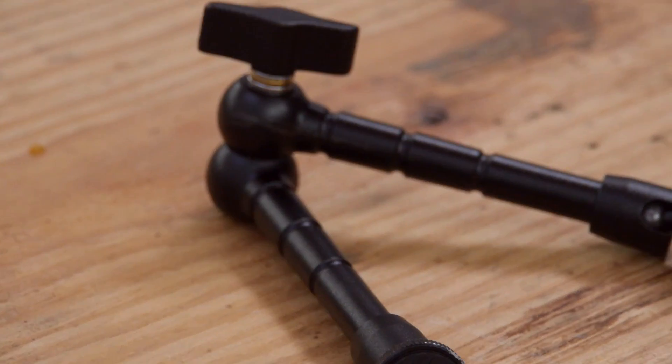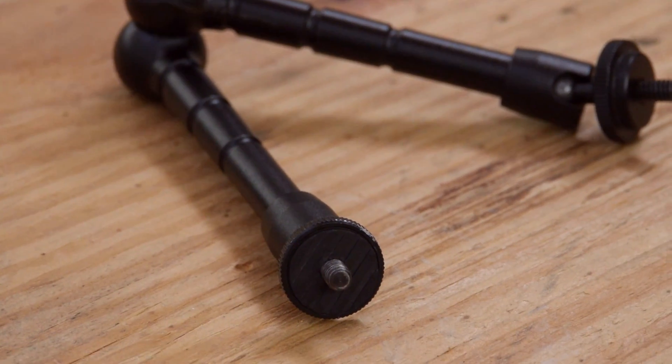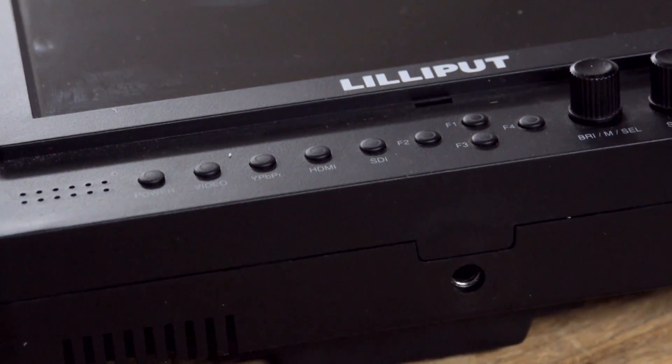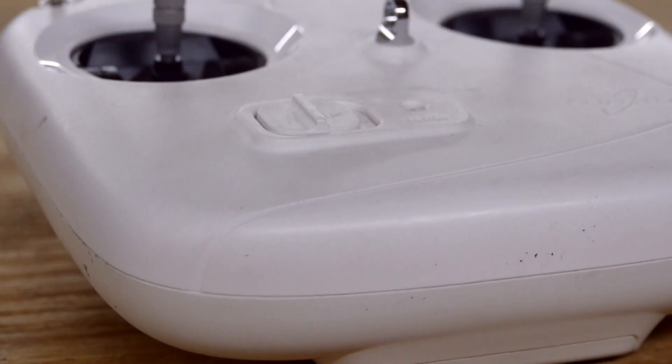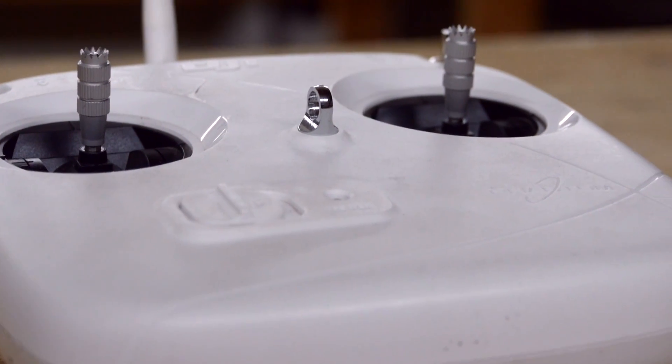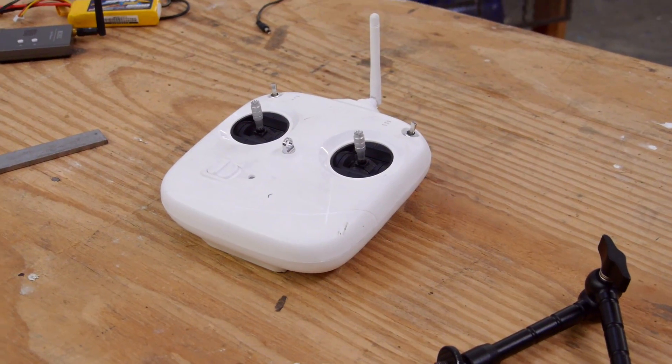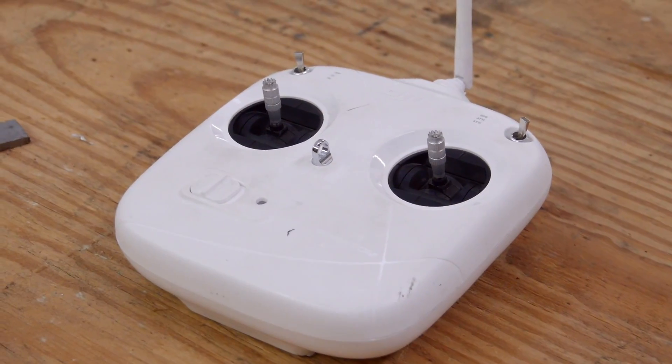The quarter-inch thread on the magic arm is the standard mount you'll find on most video and photography gear, including our monitor. But there's no way the plastic housing on the Phantom controller is going to be able to support such a rig, which means first I'll be adding the thread to a small piece of metal and then mounting the metal to the back side of the controller.